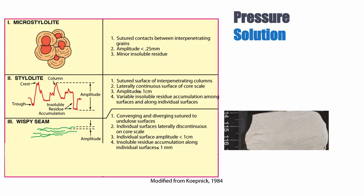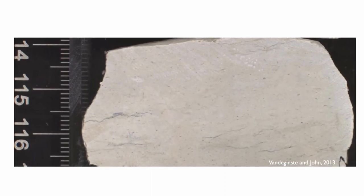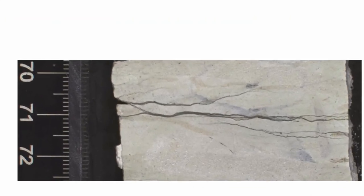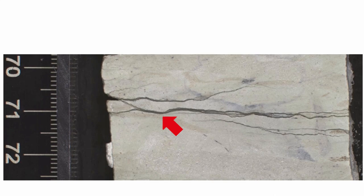You can also have wispy seams — tiny evidence of dissolution forming small dissolution seams. Just like in stylolites, the black material preserved here is the insoluble residue of the limestone concentrated at the plane of dissolution. These seams can then be reused by further fluids, giving you solution-enhanced seams. Here's a beautiful example from offshore New Zealand of seams used as dissolution pathways — solution-enhanced seams.